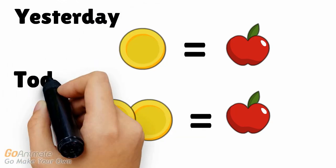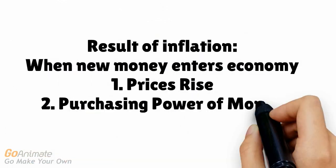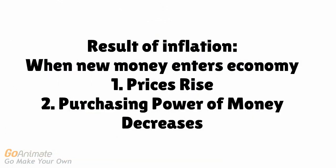Yesterday, one piece of gold bought one apple, but today you need to pay two pieces of gold in order to purchase an apple. Ultimately, one of the results of an inflation of the money supply is that once the new money enters the economy, prices rise and the purchasing power of money eventually decreases.